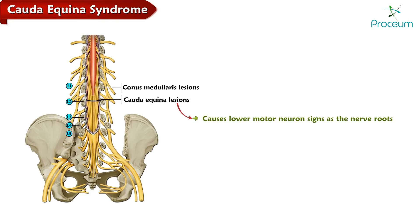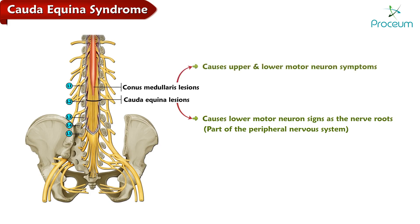A cauda equina lesion causes lower motor neuron signs, as the nerve roots are part of the peripheral nervous system. In contrast, a lesion in the conus medullaris causes both upper and lower motor neuron symptoms, as the conus is part of the spinal cord.